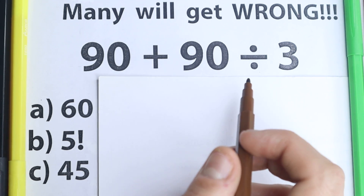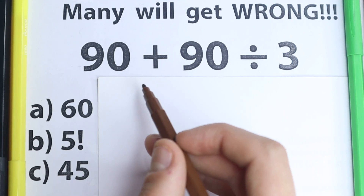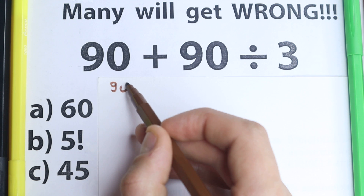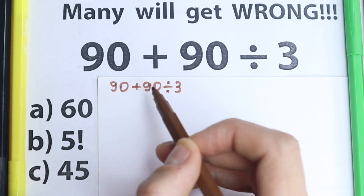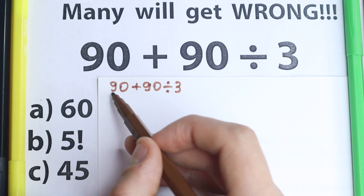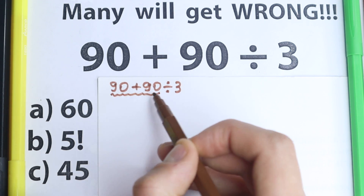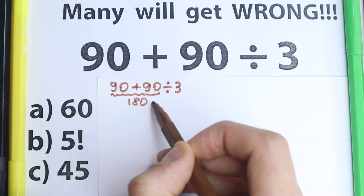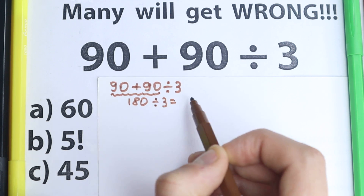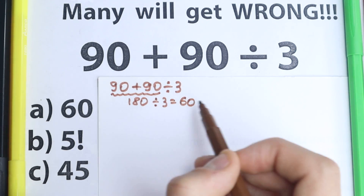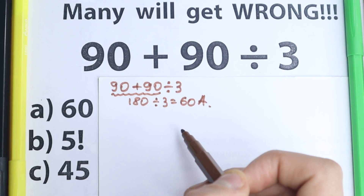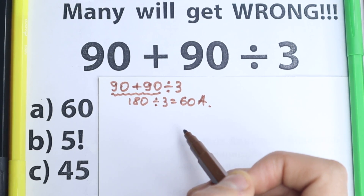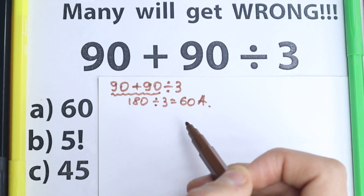So let's try to solve it. I feel one part of you solved it like this: 90 plus 90 equals 180, divided by 3 equals 60. So 60 — this is option A. And I feel one part of you solved it that way.